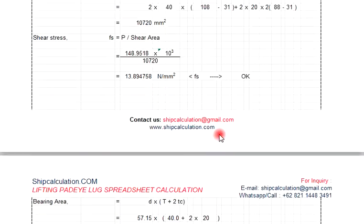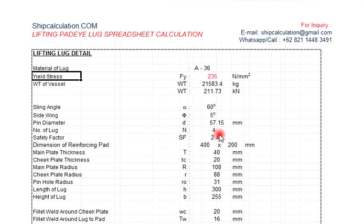Based on this information, you have to get the material of lug using mild steel A36, and the yield stress is 235. You can change to make it higher, 355, depending on your calculation. At the moment we are using 235.